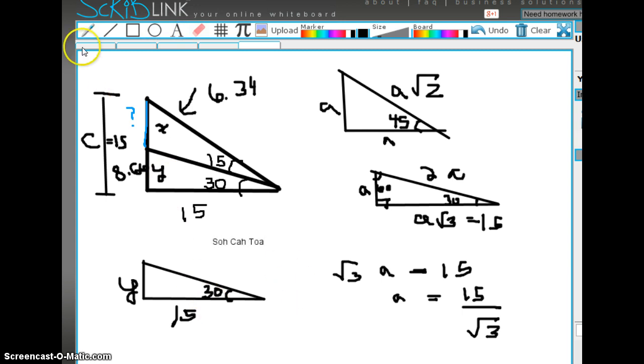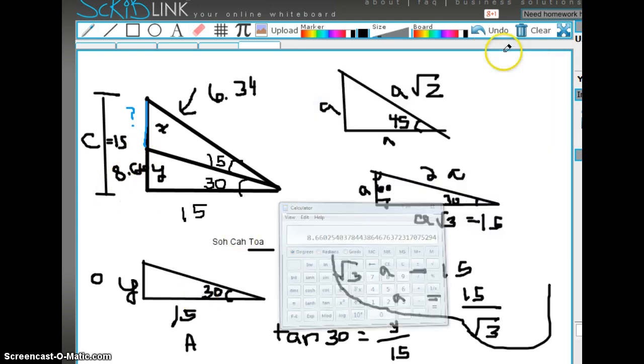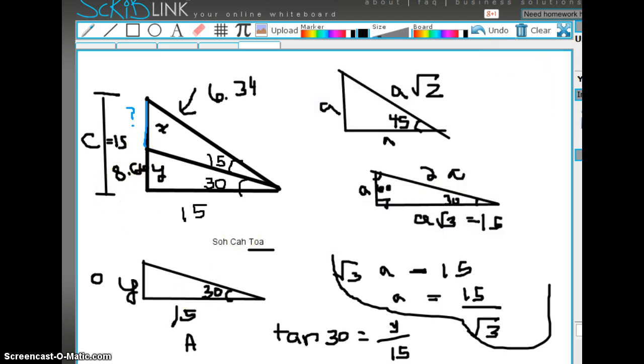This is the opposite side and this is the adjacent so we're going to be using the tangent. The tangent of 30 is equal to the opposite which is equal to Y divided by adjacent which is 15. So let's try that out. 30 tangent times 15 is equal to 8.66. So it's the same answer.